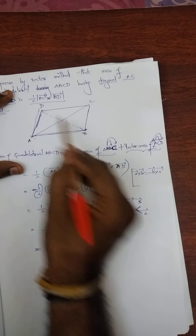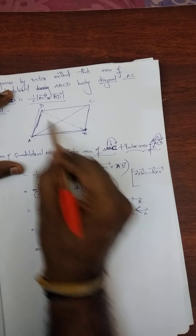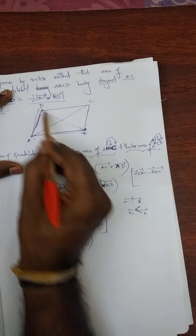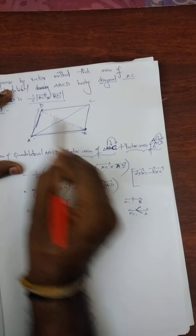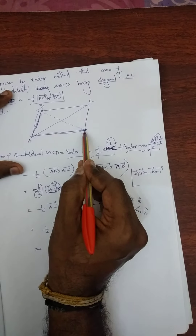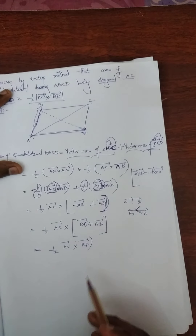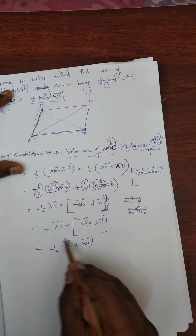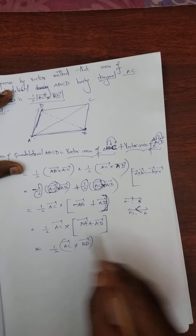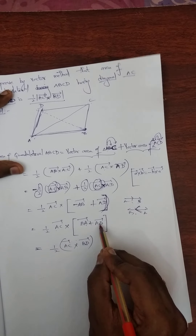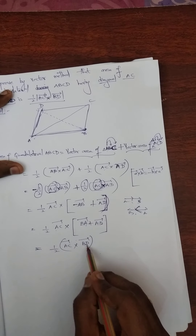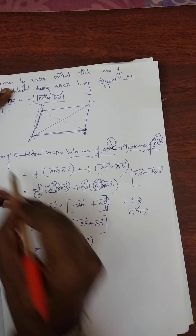Because BD means — BA plus AD. Where is BD? This is AD. BA plus AD is something but BD vector. So I can write BD vector. So this is 1/2 AC vector cross BD vector.